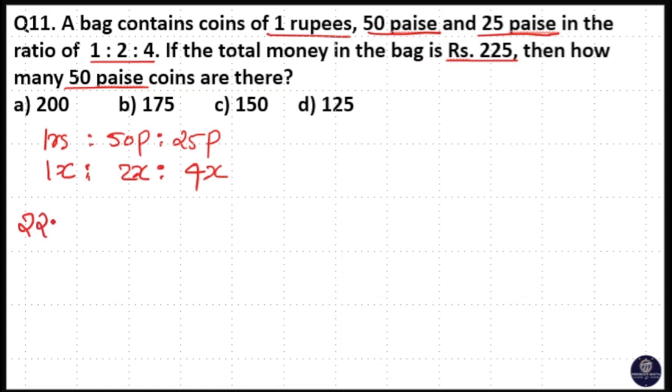So here total money 225 is equal to 1x number of 1 rupee coins plus 2x number of 50 paise coins. So 2x number of 50 paise coins - this is 50 paise, this is rupee, this is also rupee, this is paise.